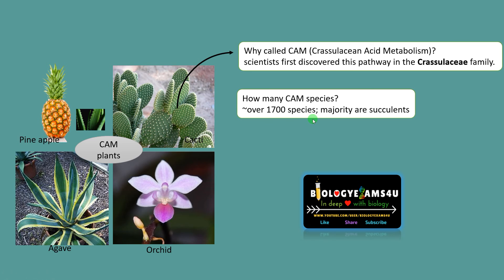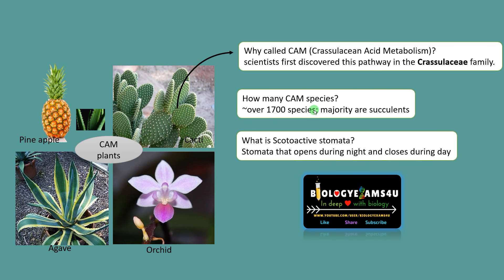Stomata that opens during night and closes during daytime is called scotoactive. CAM plants possess scotoactive stomata that helps in opening during night, receiving carbon dioxide during nighttime, and storing it as malate. During daytime, the stomata closes to prevent water loss by transpiration. From malate decarboxylation, carbon dioxide is released and runs the Calvin cycle.